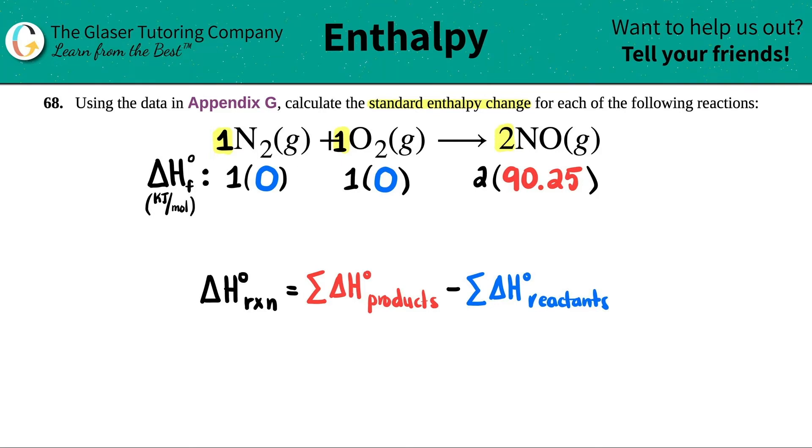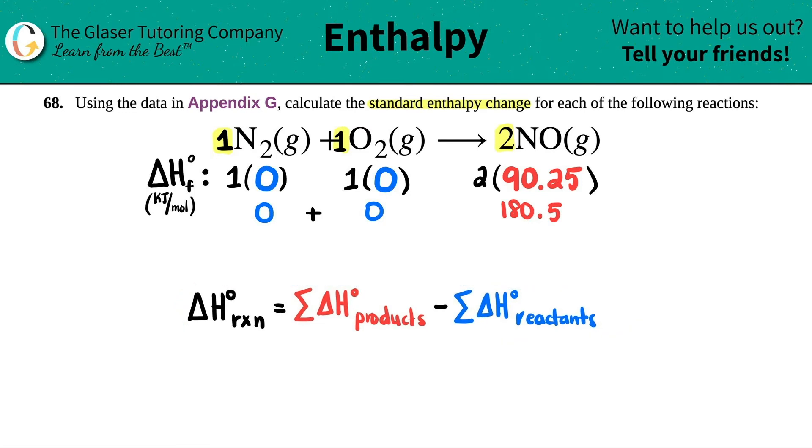So this side will still be zero, zero and zero. And now 90.25 times two is 180.5. Okay, now let's sum it up. So I add up all the blue ones. Zero plus zero is obviously just zero. And this number would be the same, 180.5.